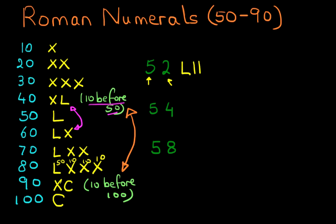How about 54? Now again, we start on the left-hand side, the 50. We know that already. That is L. And now we do the 4. How do we do 4? Well, it's 1 before 5. Remember that? So that is 54. It is LIV.